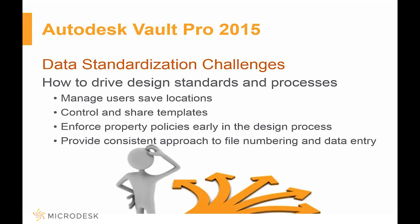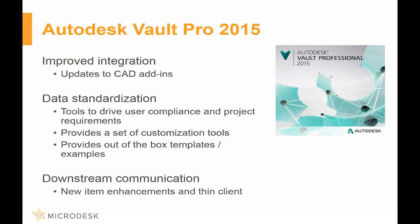First we're going to look at Vault Pro 2015. Looking at this from the standpoint of an actual project, we have to figure out how we're going to manage, organize, and coordinate with all the other people on the project — because nobody works on an island, especially today. Some things they've improved include data standardization. On a large or small project, you don't want to look for files in 15 different locations or named 13 different ways. This lets you template things and drive compliance for project requirements.